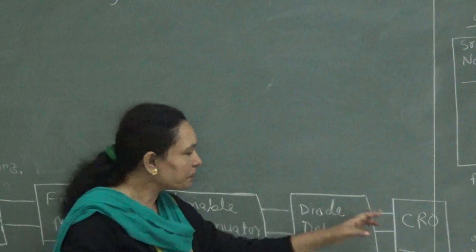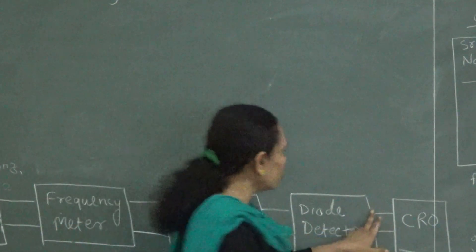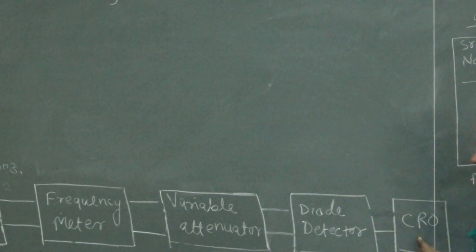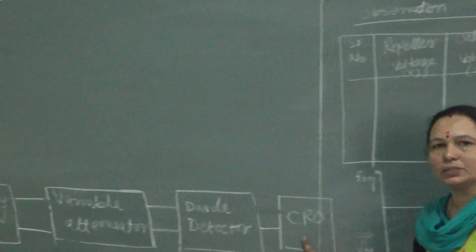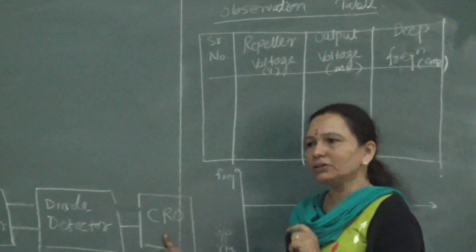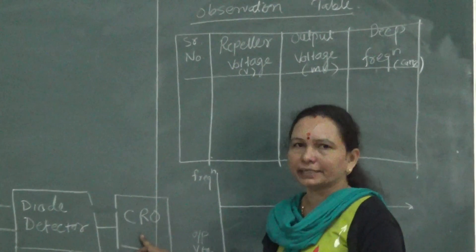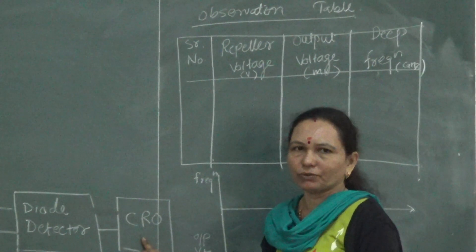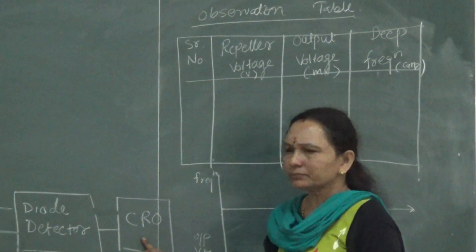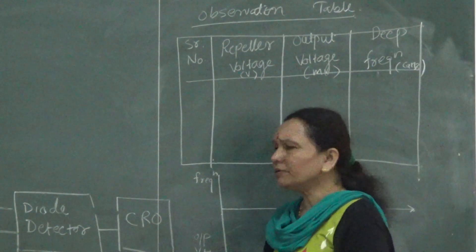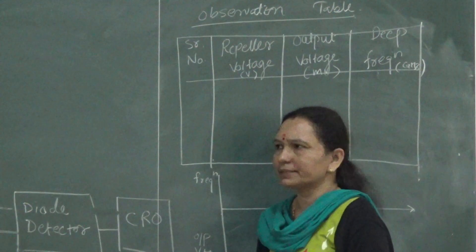Finally, the output is connected to the CRO. On the CRO we observe a square wave, and accordingly we draw the characteristics.